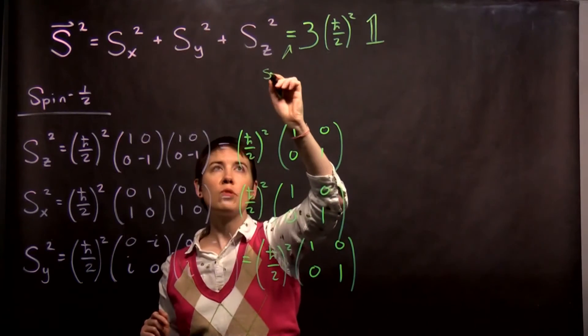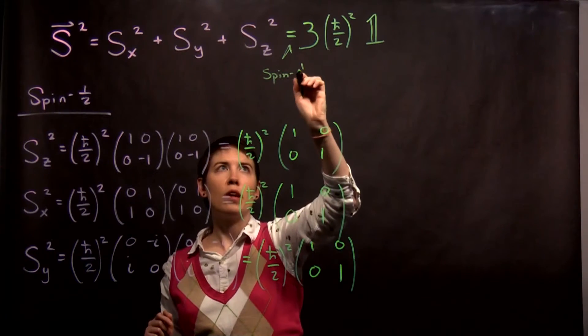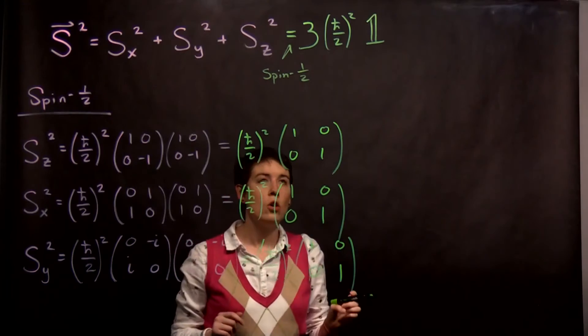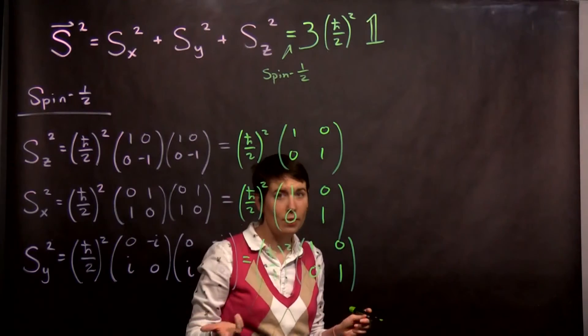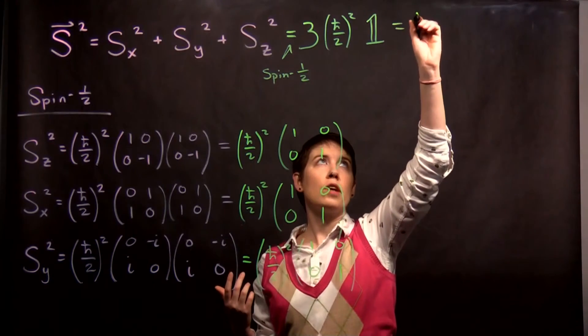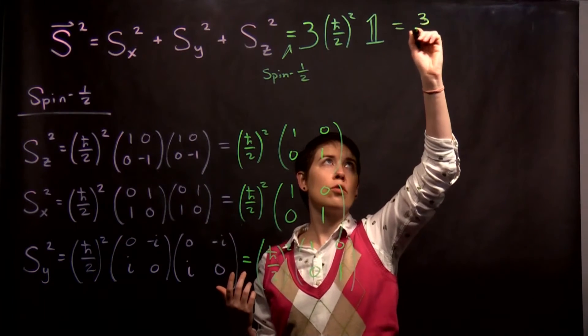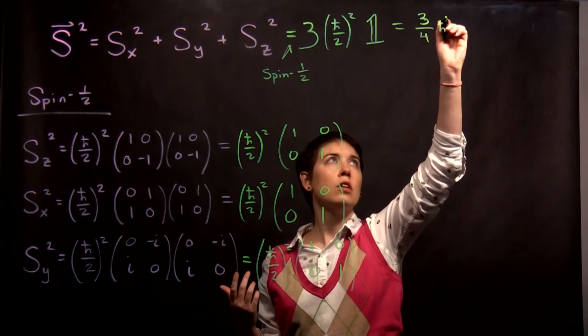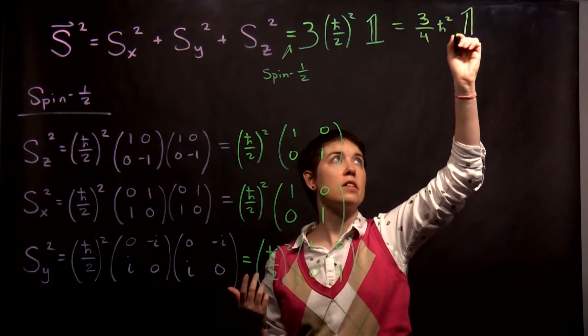Now, I am going to say that this is specifically for spin one-half, worth noting. So, another way that we could write this, and again, later we'll find out why we're making this choice, is that we can write this as three-fourths h-bar squared, and again, that identity matrix.